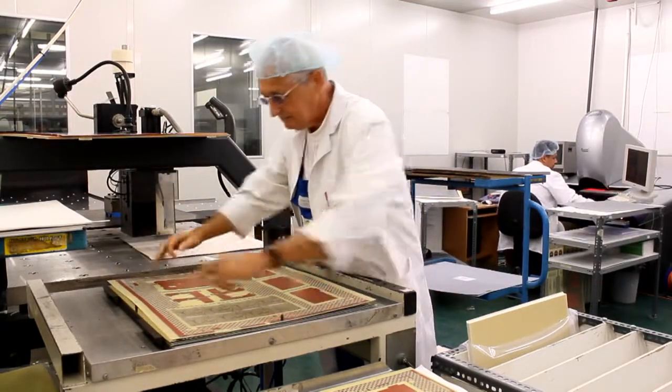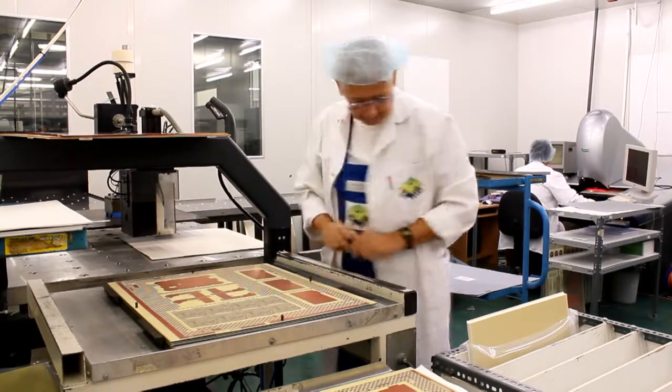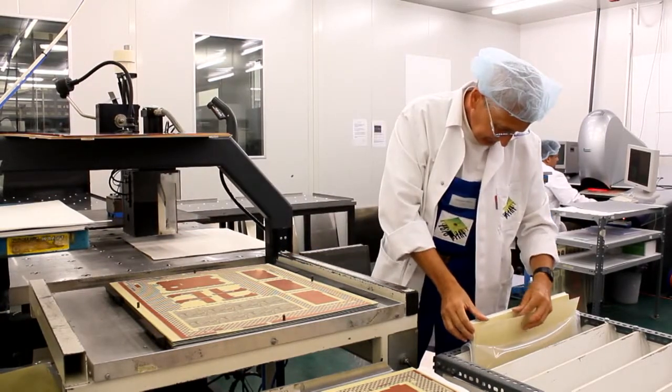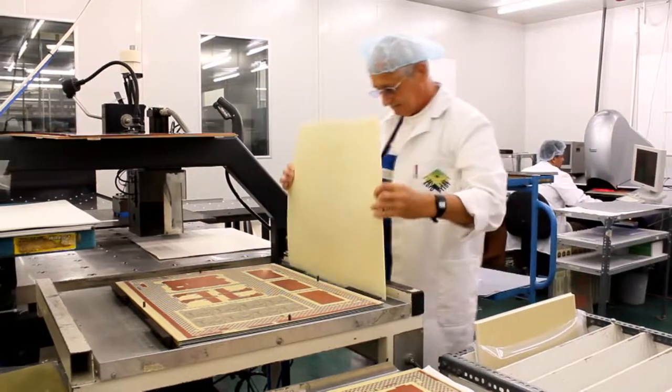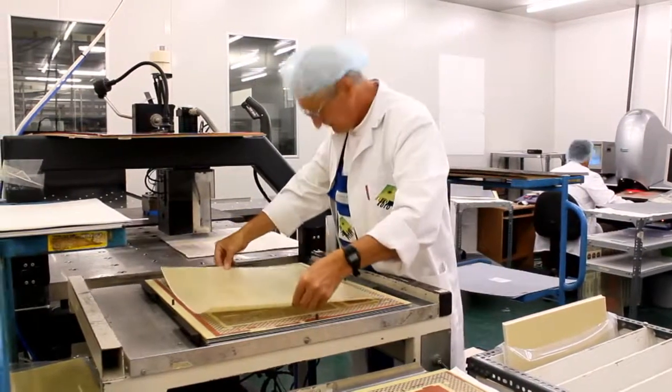Now he places the pre-treated core carefully over the alignment pins. Then he adds two more sheets of prepreg, another copper foil and an aluminum press plate.